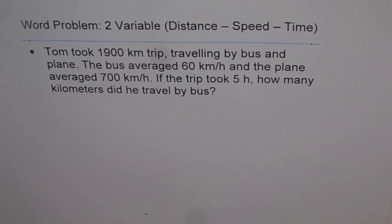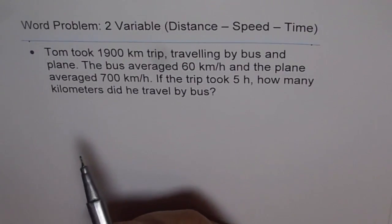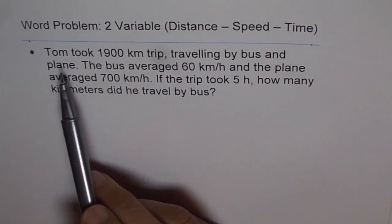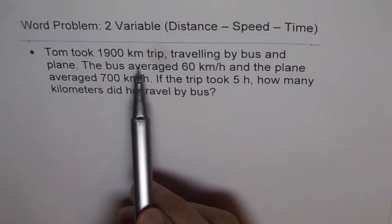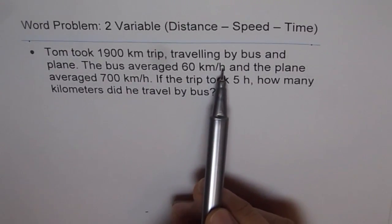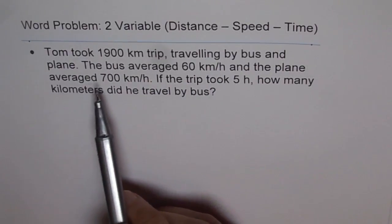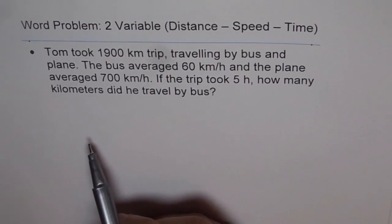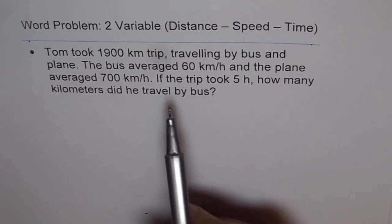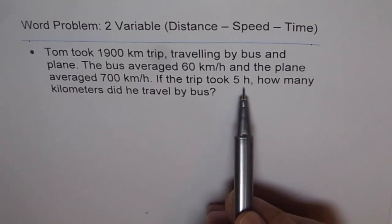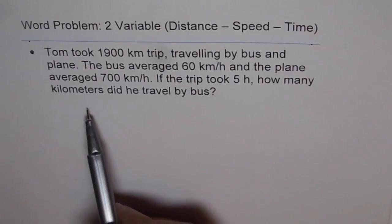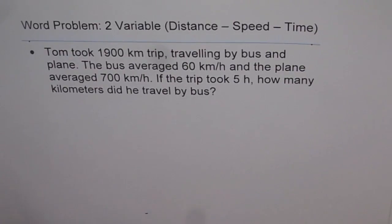Let us try to understand how to solve a distance-speed-time problem using two variables. The question is: Tom took a 1900 kilometer trip traveling by bus and plane. The bus averaged 60 kilometers per hour and the plane averaged 700 kilometers per hour. If the trip took 5 hours, how many kilometers did he travel by bus?